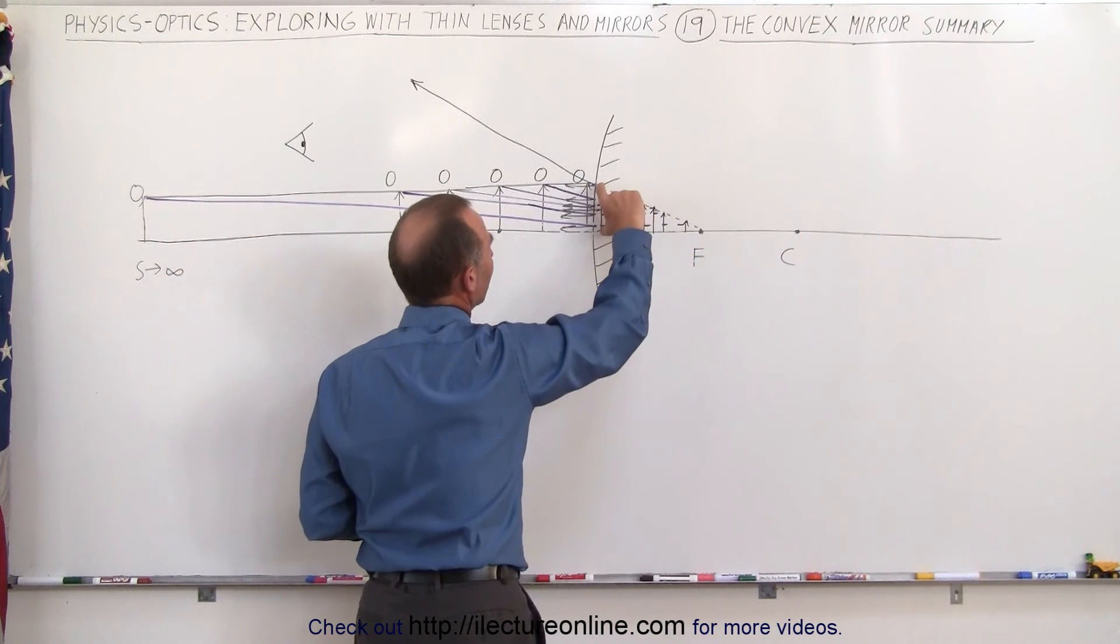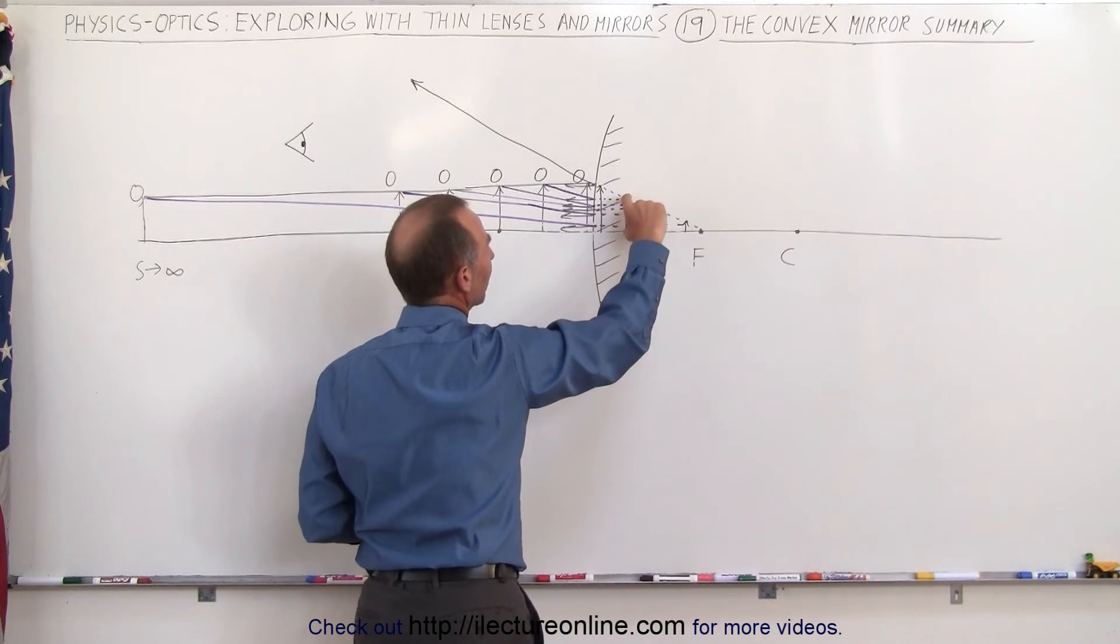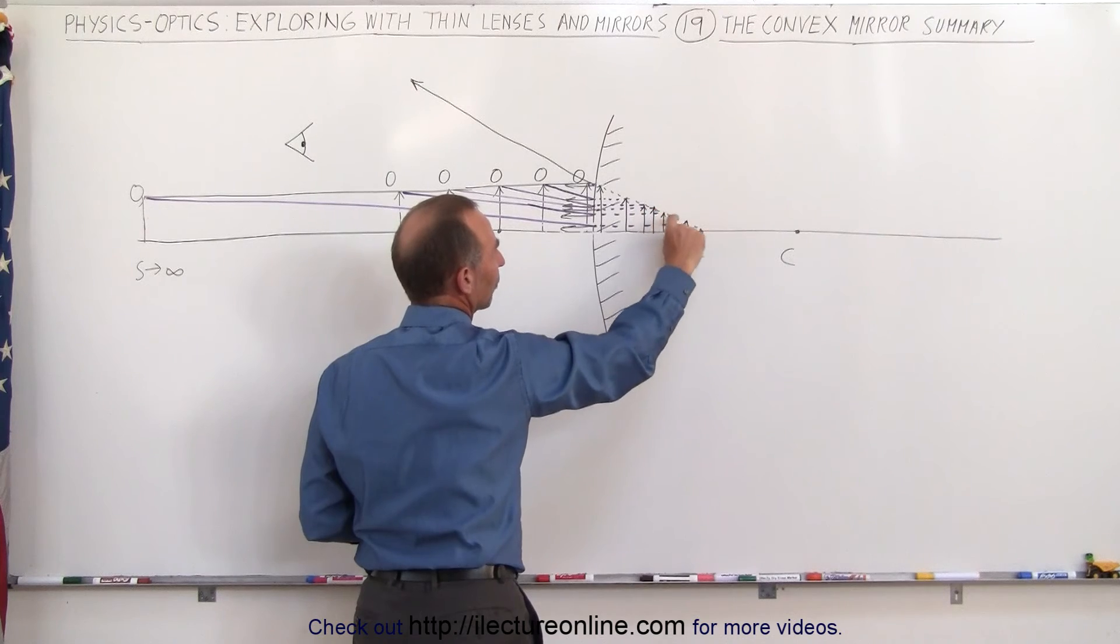So you can see that here's the first image where the two lines meet, there's the second image, there's the third, the fourth, the fifth, and so forth.